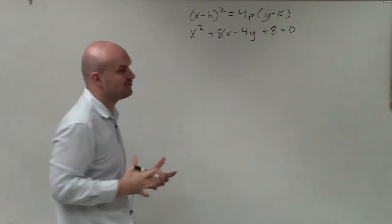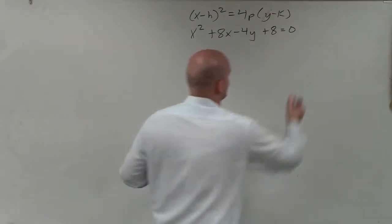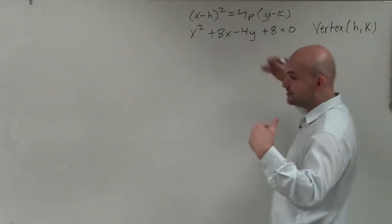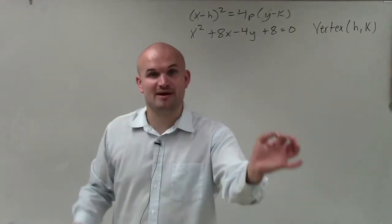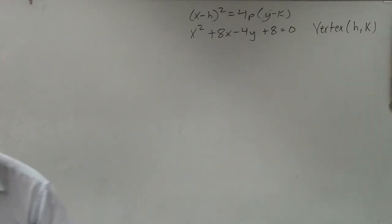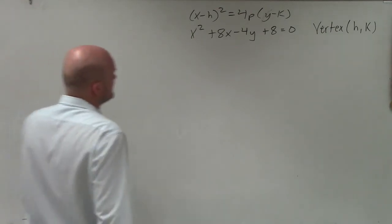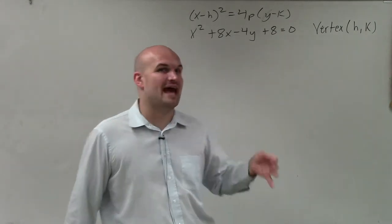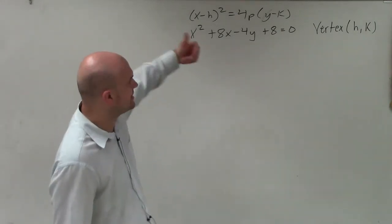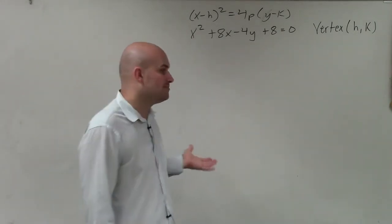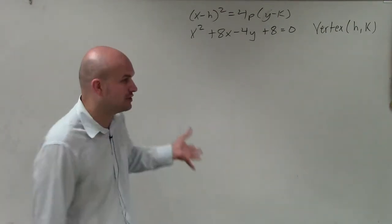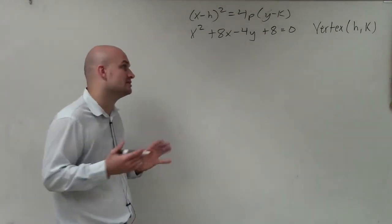Once I can put it in that format, I can identify what the vertex is, because the vertex is (h, k). The distance from the vertex to the focus, as well as the distance from the vertex to the directrix, is going to be the absolute value of p. So putting it in this format helps me identify not only the vertex, but also the value of p, to then identify the focus and the directrix.